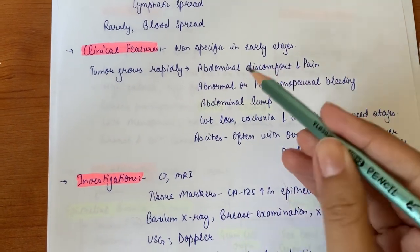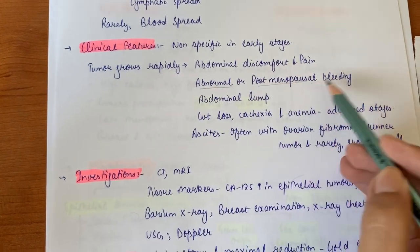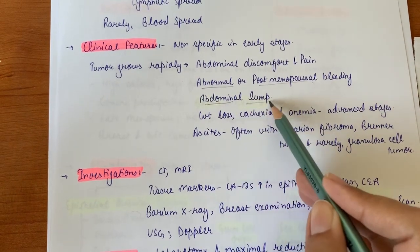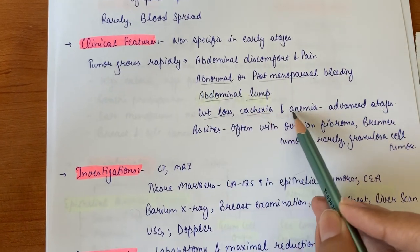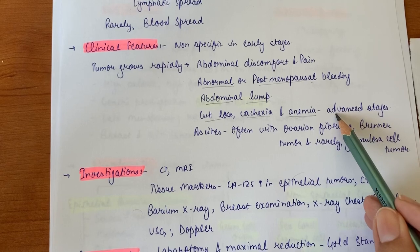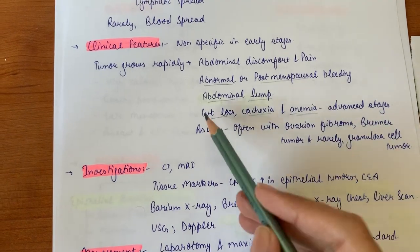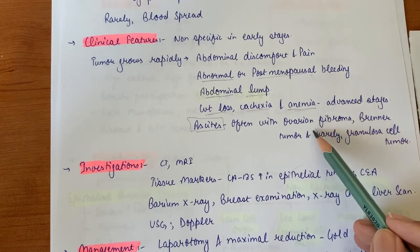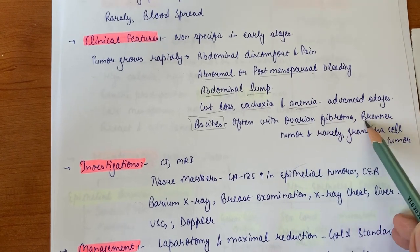It causes abnormal or postmenopausal bleeding. An abdominal lump may be felt. Weight loss, cachexia, and anemia are present as signs in advanced stages. Ascites is often present with these tumors, with ovarian fibroma, with Brenner tumor, and rarely with granulosa cell tumor.